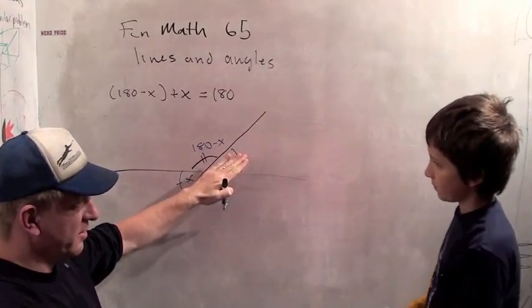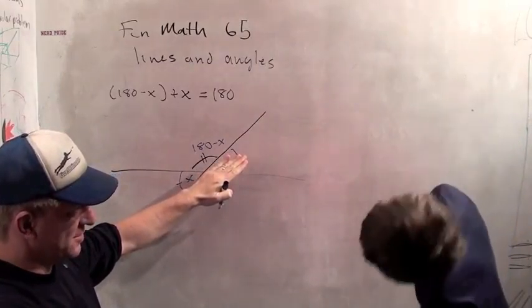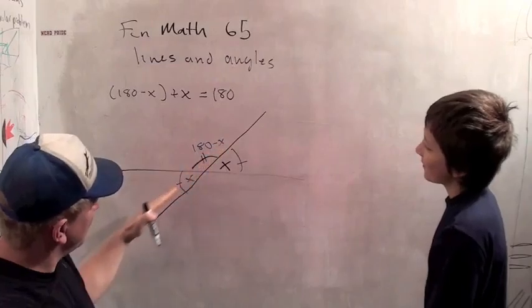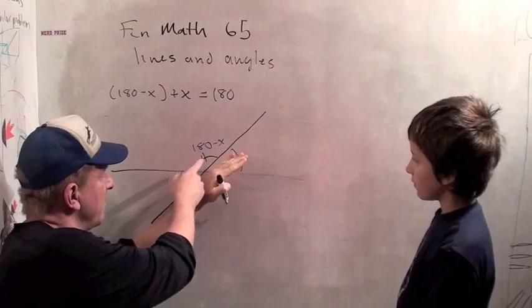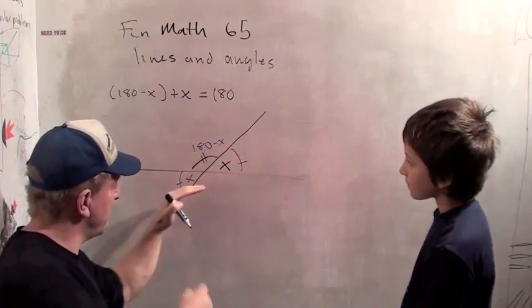Because we have this tilted straight line here. Would you mind tilting? Yeah. Okay. This straight line is x. So that's x.